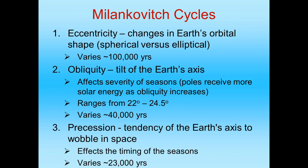There are three Milankovitch cycles. First, eccentricity: changes in Earth's orbital shape around the sun. Our path around the sun is not constant — sometimes the orbit is more spherical, sometimes more elliptical, where Earth moves farther from the sun, affecting the amount of radiation reaching us. This varies every 100,000 years, so it will not cause short-term climate change.